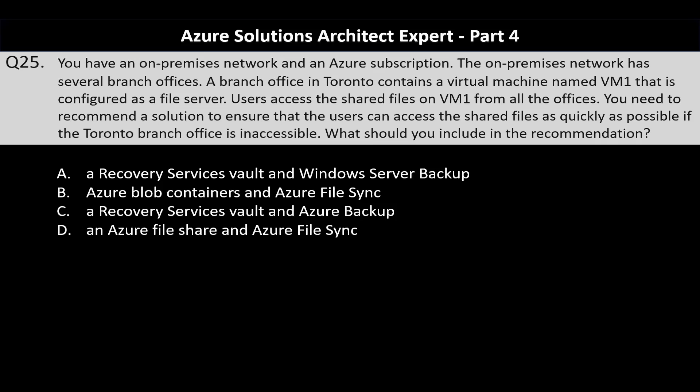Question number 25. You have an on-premise network and an Azure subscription. The on-premise network has several branch offices. A branch office in Toronto contains a virtual machine named VM-1 configured as a file server, and users access the shared files on VM-1 from all offices. You need to recommend a solution to ensure users can access shared files as quickly as possible if the Toronto branch office is inaccessible.